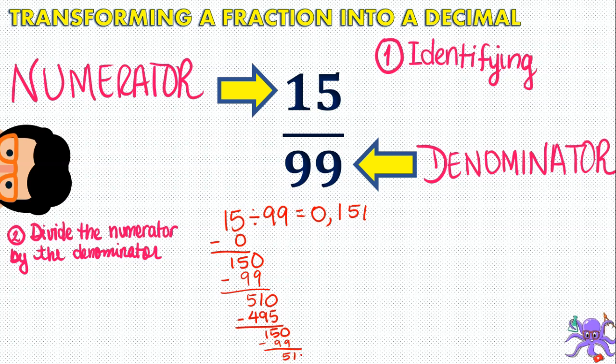So now, 51, you would normally add a 0 and know that 510 divided by 99 is 5. But then, you see a pattern. You see that there's 15 here, 15 here, 51 here, and 51 here. And you also see that these numbers are repeating. So, that means that it's going to continue being 15, 15, 15. So, you have to be well aware of this so that you don't divide forever. This means that this fraction is a repeating decimal.